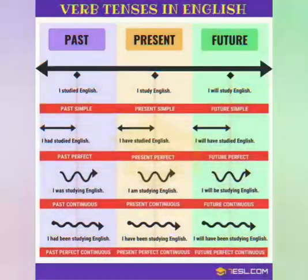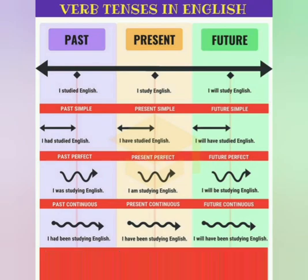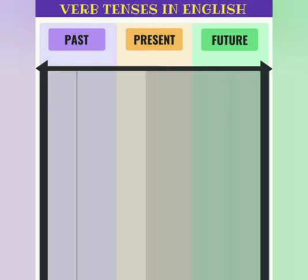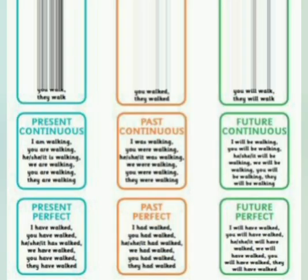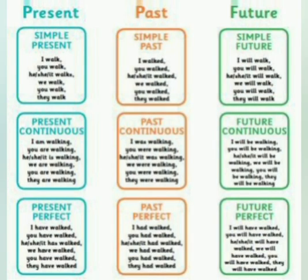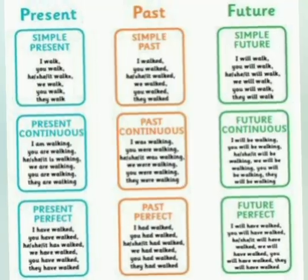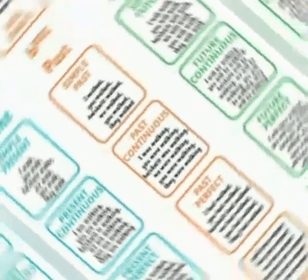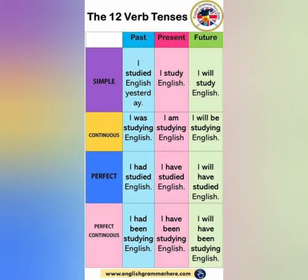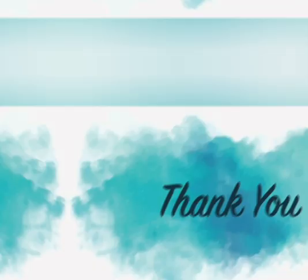Future tense speaks about the incidents that have not happened yet but could happen anytime in the future. There are four types of future tense: simple future tense, future continuous or future progressive, future perfect tense, and future perfect continuous tense.